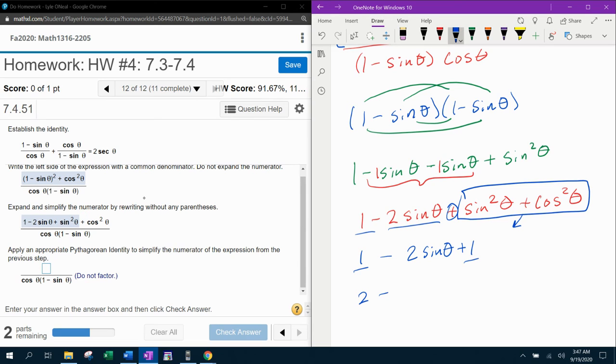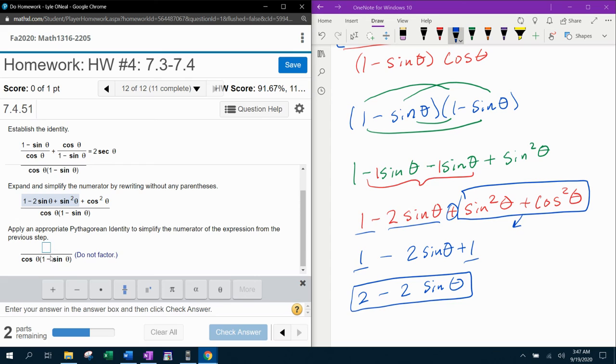And then I can combine like terms. One plus one is two minus two sine theta. So this is the numerator simplified after we apply the Pythagorean identity.